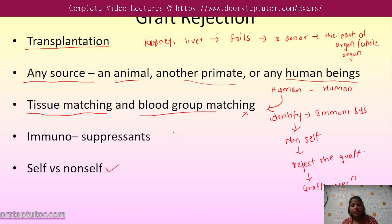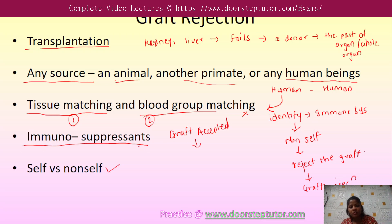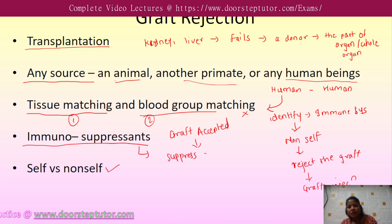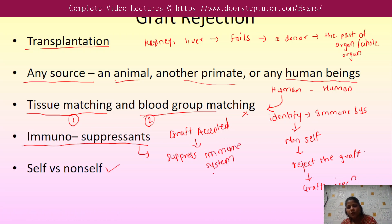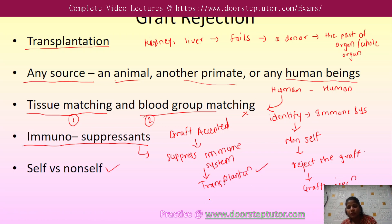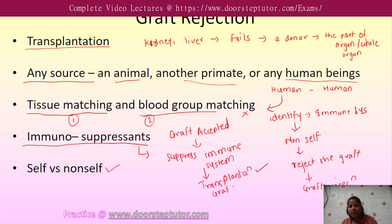Even after a graft is accepted — when both matching conditions are fulfilled — for a particular time we need to take immunosuppressants, which suppress the immune system so that the transplantation is successful and the graft will not be rejected.